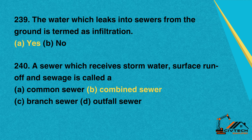Question 240: A sewer which receives storm water, surface runoff, and sewage is called. A. Common sewer. B. Combined sewer. C. Branch sewer. D. Outfall sewer. Correct option: B. Combined sewer.